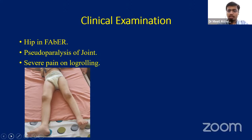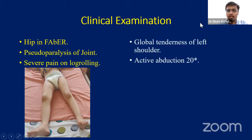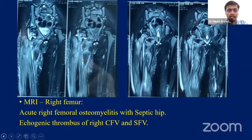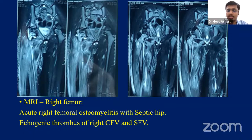This was the presentation of patient A. Patient B had global tenderness around the left shoulder and active abduction limited to 20 degrees. For patient A, we performed an MRI of the right femur along with the pelvis and both hips, suspecting septic hip. It confirmed acute right femoral osteomyelitis along with septic hip, and he also had an echogenic thrombus in the right common femoral vein.